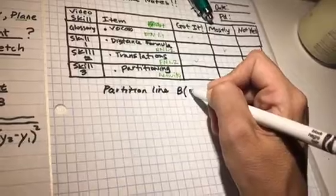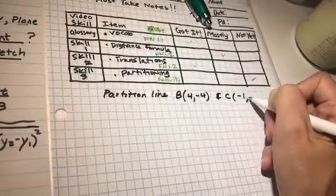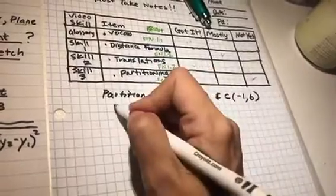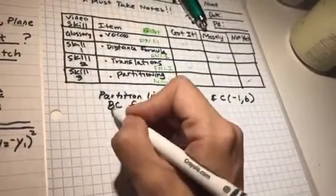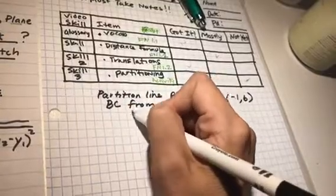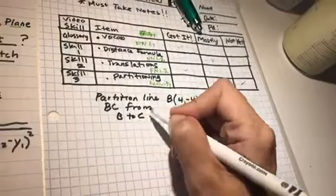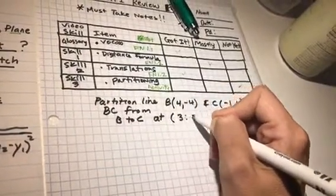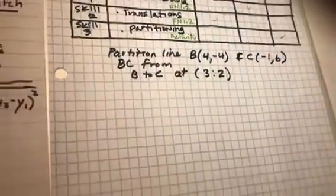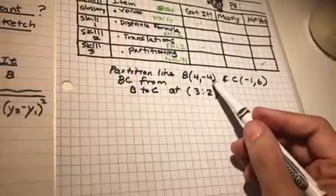Point B is 4, negative 4. And point C is negative 1, 6. And so partition a line B, C, from B to C, at a ratio 3 to 2. So, the very first step I'm going to do is, I'm going to graph it.